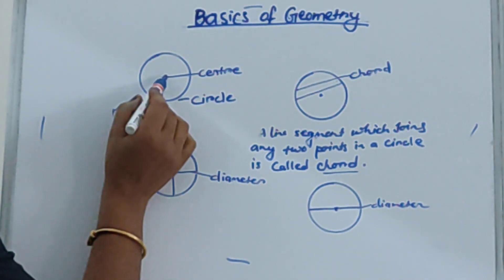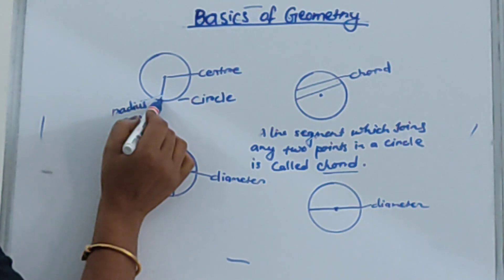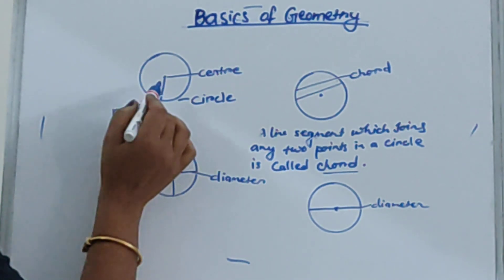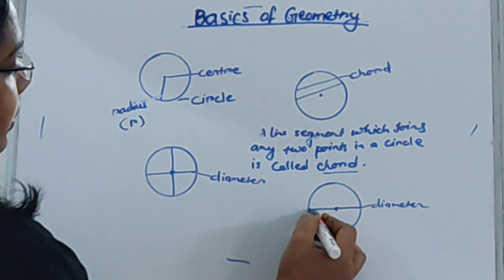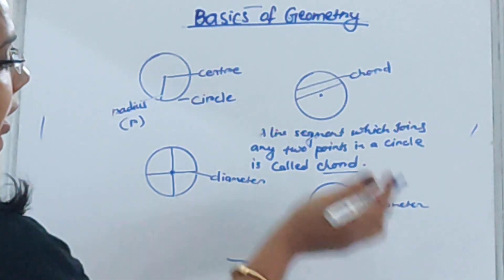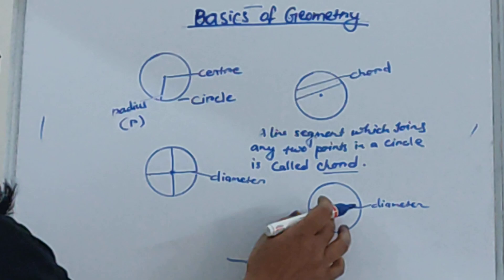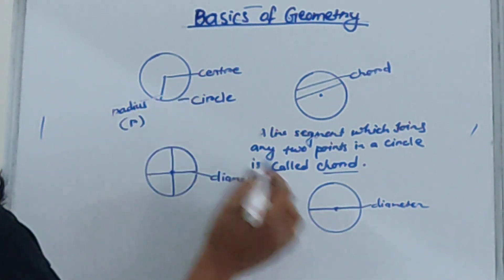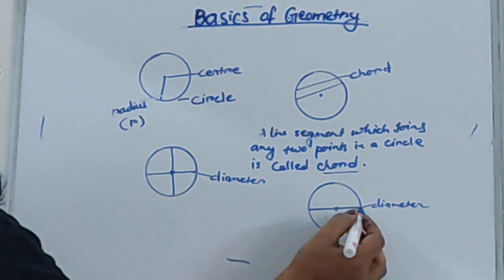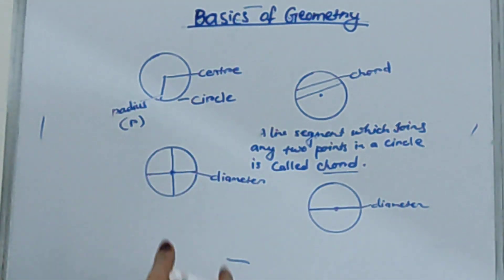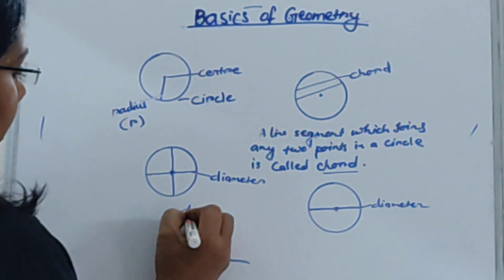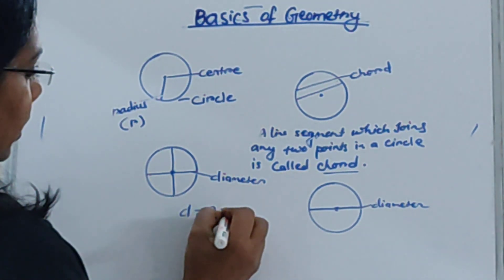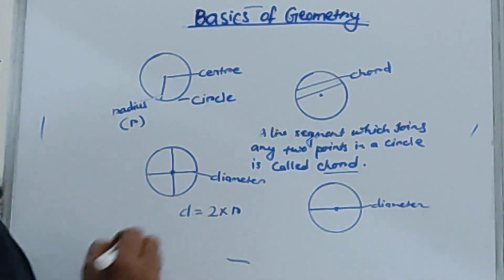The radius goes from the center to the periphery, so it is half of the diameter. The diameter goes from the periphery, through the center, to the other periphery — so the diameter is double the radius. The formula is: D = 2 × R.